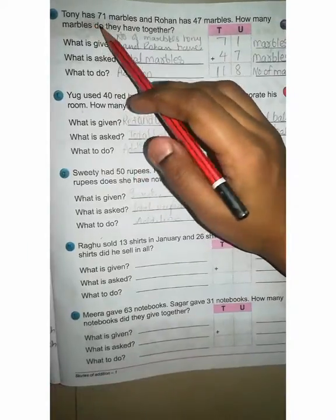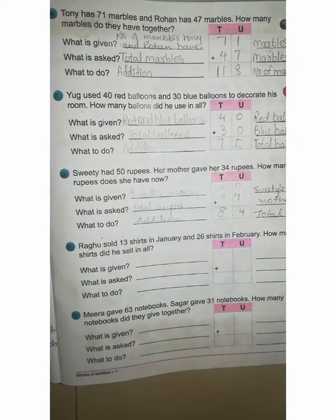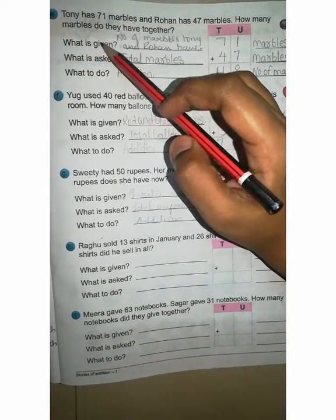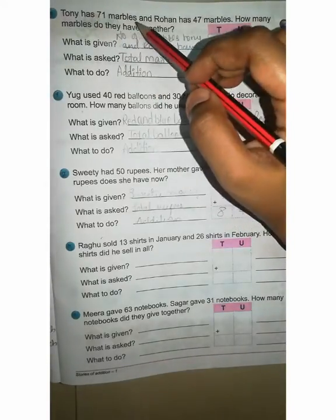You can see your E question. Tony has 71 marbles and Rohan has 47 marbles. How many marbles do they have together? It means you are given in this question. Now what is given? Numbers of marbles Tony and Rohan have. Yes. Tony also have 71 marbles and Rohan also have 47 marbles.